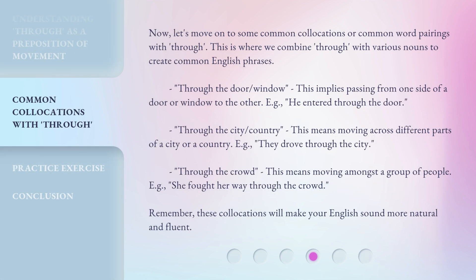Now, let's move on to some common collocations or common word pairings with through. This is where we combine through with various nouns to create common English phrases. Through the door, window — this implies passing from one side of a door or window to the other. For example: He entered through the door. Through the city, country — this means moving across different parts of a city or a country. For example: They drove through the city. Through the crowd — this means moving amongst a group of people. For example: She fought her way through the crowd. Remember, these collocations will make your English sound more natural and fluent.